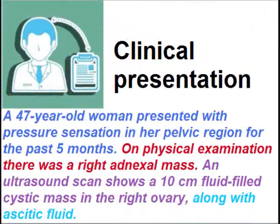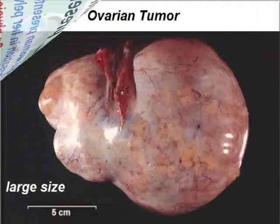The clinical presentation is of a 47-year-old woman who presented with pressure sensation in the pelvic region for the past 5 months. On physical examination, there was a right adnexal mass. An ultrasound scan showed a 10-centimeter fluid-filled cystic mass in the right ovary, along with ascitic fluid.